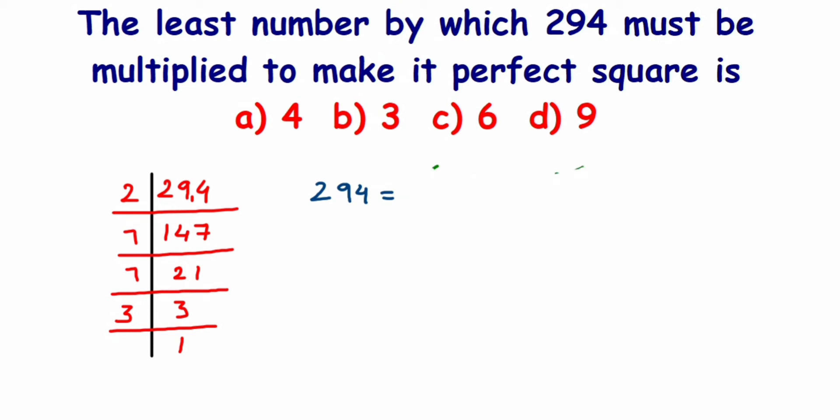I'll just rewrite this. 294 equals 2 into 7 into 7 into 3. I'm going to multiply two things, so 294 is equal to 2 - I'm going to multiply with one more 2 because I want to make it a pair.